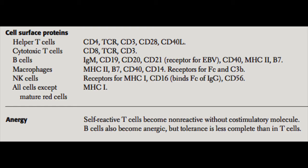A mnemonic to help remember this: you can drink beer at the bar when you're 21 — B cells, beer, Epstein-Barr virus, there's the bar, CD21. So CD21 is the surface marker on B cells involved in receptor recognition and binding of the Epstein-Barr virus.